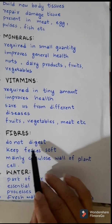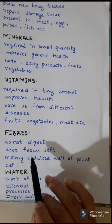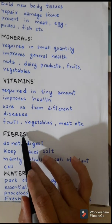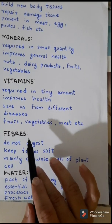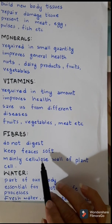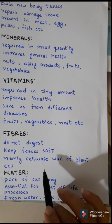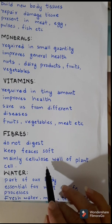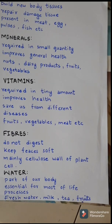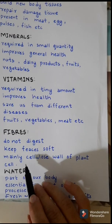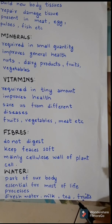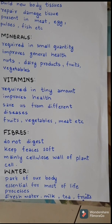Fibers are another component of food. They have the characteristic that they do not digest at all — it is mainly the cellulose of cell walls. They are also known as roughage. Fibers retain water, keeping the feces soft, and give the intestinal muscles something to push on, keeping food moving through the system. They are helpful in the process of digestion and are present in salads, fruits, and vegetables.